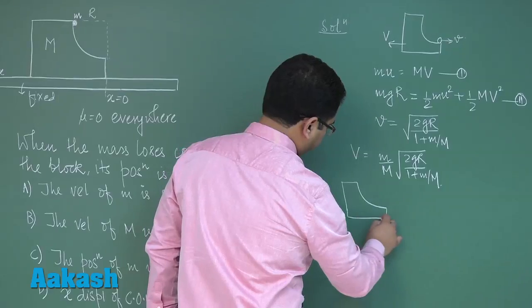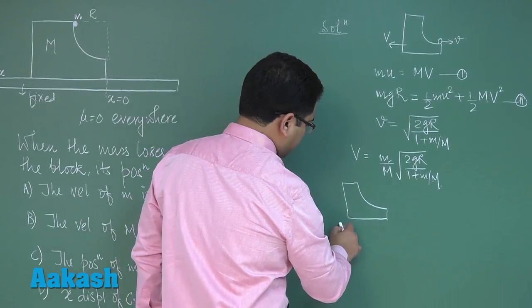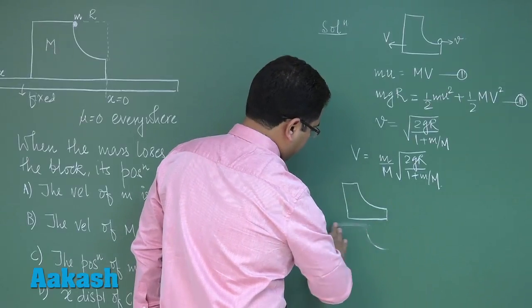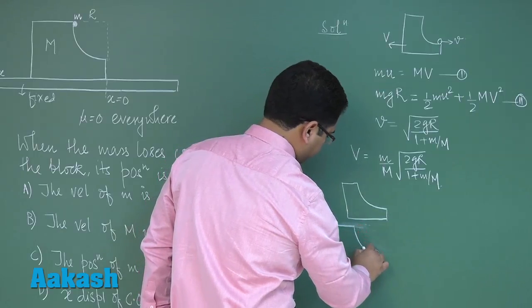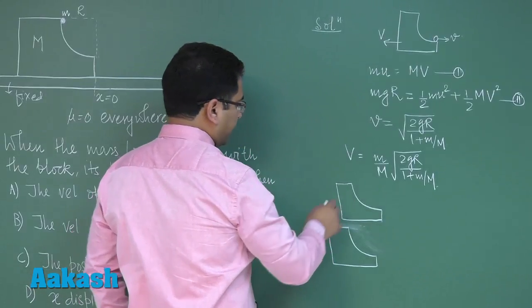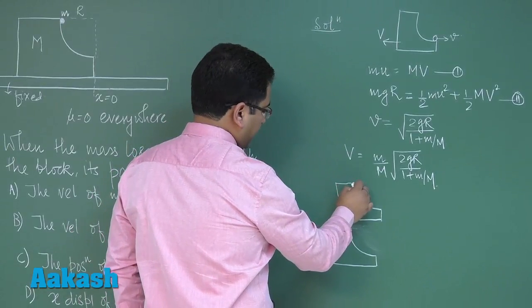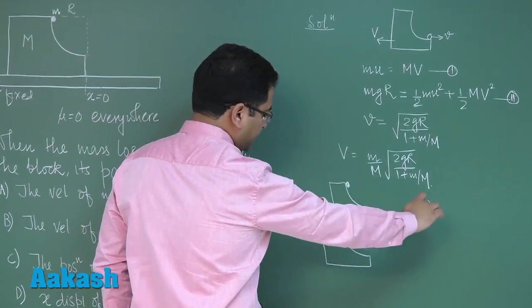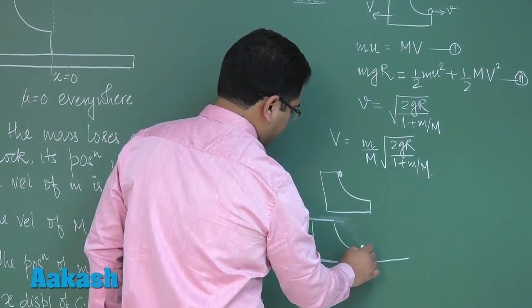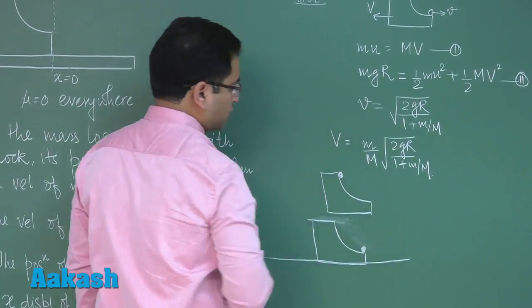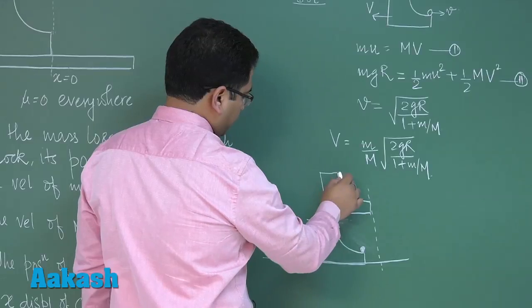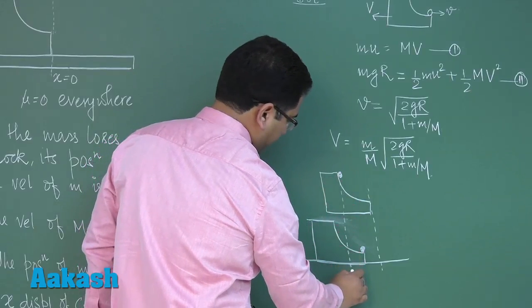So here we need to make a small figure. In this situation what I'll do is this is the initial situation and after some time let's say the figure would come something like this. Alright so now let's say initially the block was here and finally when it reaches to this position the larger block would have shifted behind so this is that particular situation.